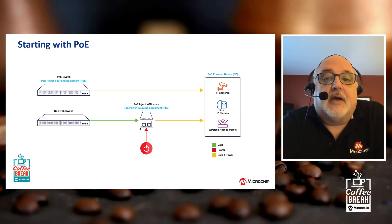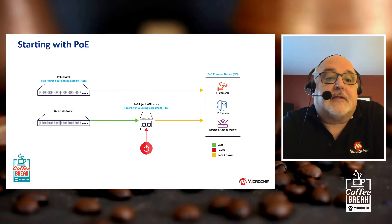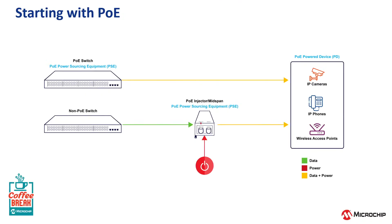Originally, when this technology was first developed, there were no powered switches. So a device was invented called a PoE injector or mid-span, so that the switch would run an Ethernet cable to the injector or mid-span, and from there it would send both power and data onto the endpoint device. The most popular applications originally were IP cameras, IP phones, and wireless access points.